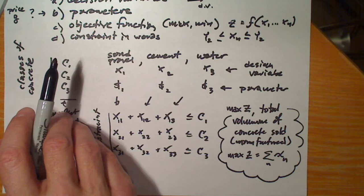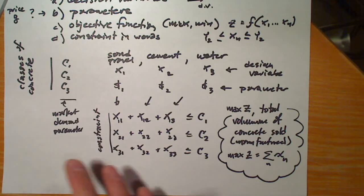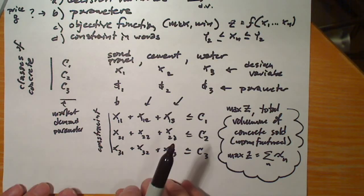Let's check the problem again. The material specification for each class of concrete allows the percentage by weight of cement, sand, and gravel to range between upper and lower bounds.